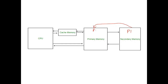When processes are under creation they are in the new state, and after process creation they change their state to the ready state. After process creation, the processes change their state from new state to ready state. Whenever a process is created, it directly enters the ready state, in which it waits for the CPU.